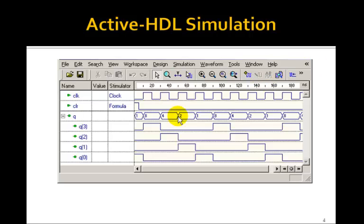Here's the simulation. We have a clock and asynchronous clear, and you see what Q is. On clear, Q0 starts at 1, and then on the next rising edge of the clock this Q0 goes into Q3.